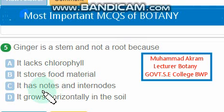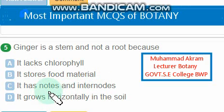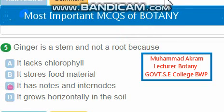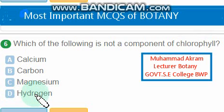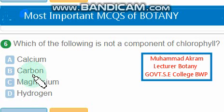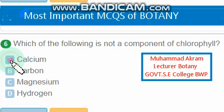Ginger is a stem and not a root because it has nodes and internodes — this is the right option (option C). Among the following, which is not a component of chlorophyll? Hydrogen, magnesium, and carbon are components of chlorophyll. Calcium is not a component of chlorophyll — this is the right option.